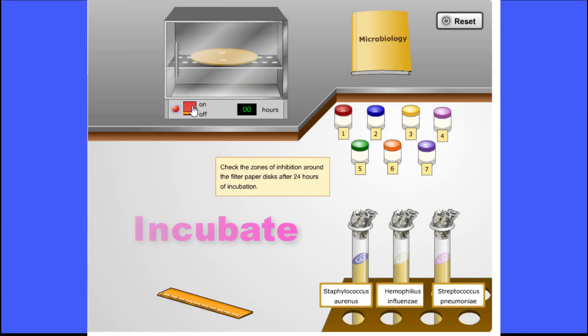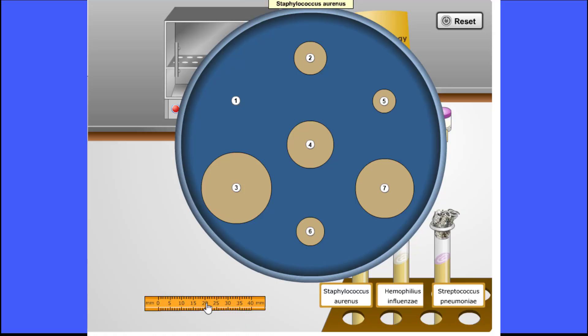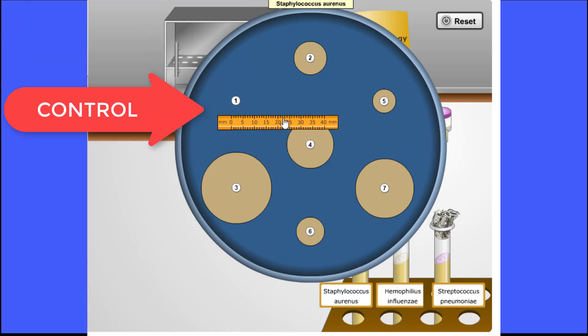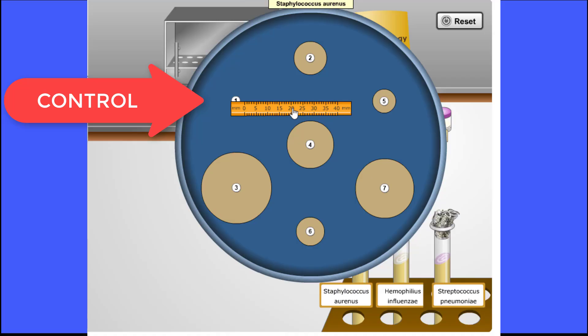Now we will incubate the petri dish. After 24 hours, we can remove our petri plate and measure the zones of inhibition. There is no zone of inhibition for number 1, which is our negative control, so that's good.